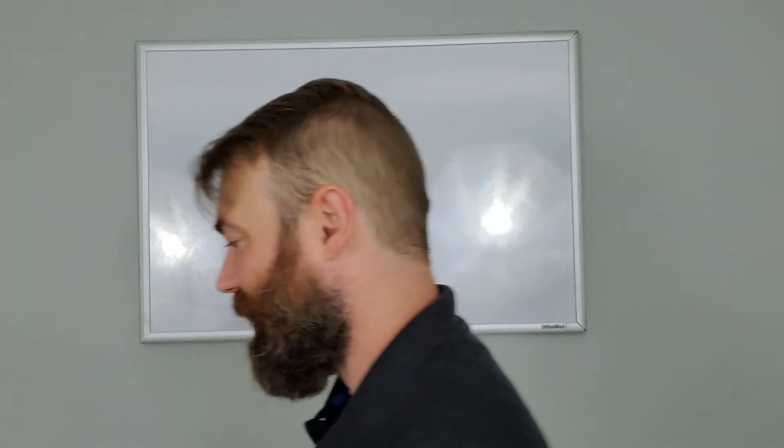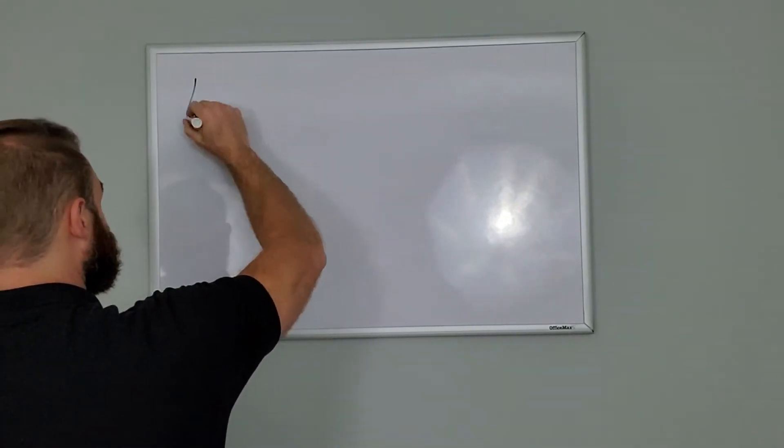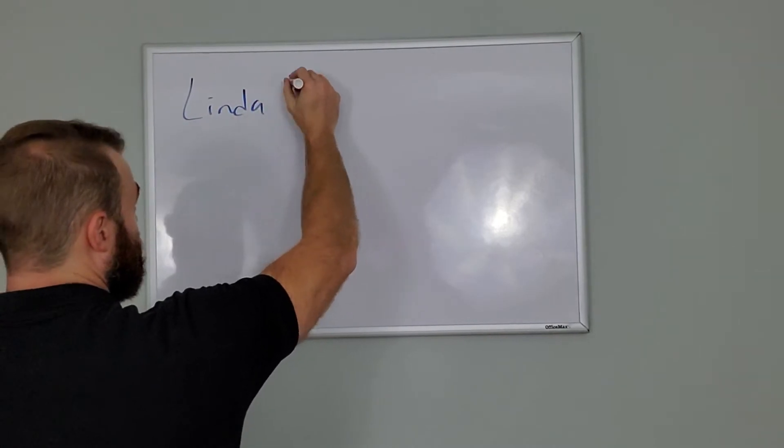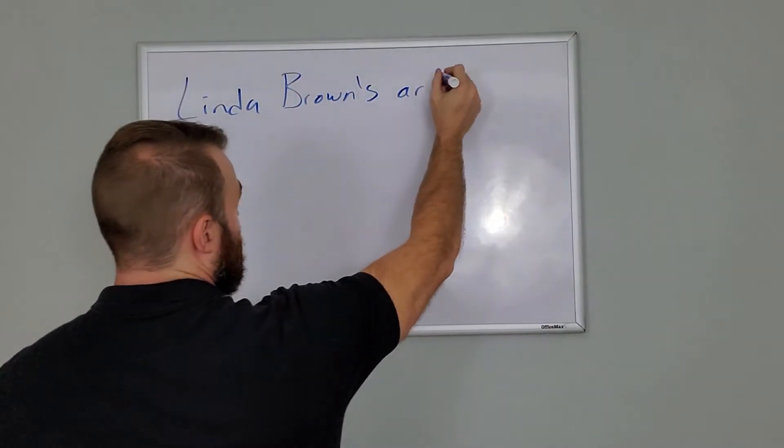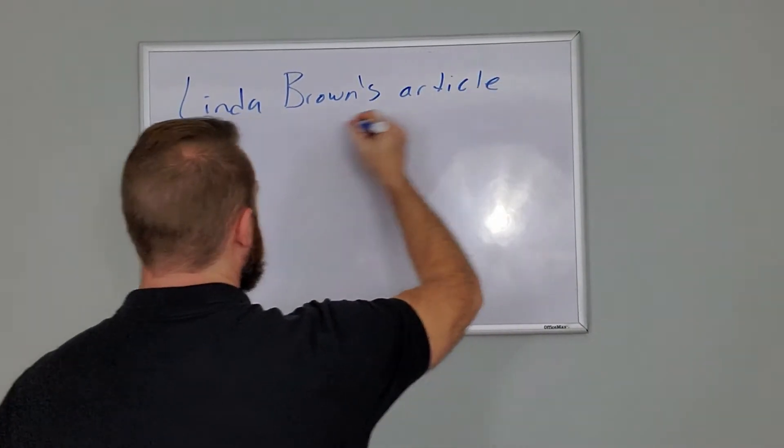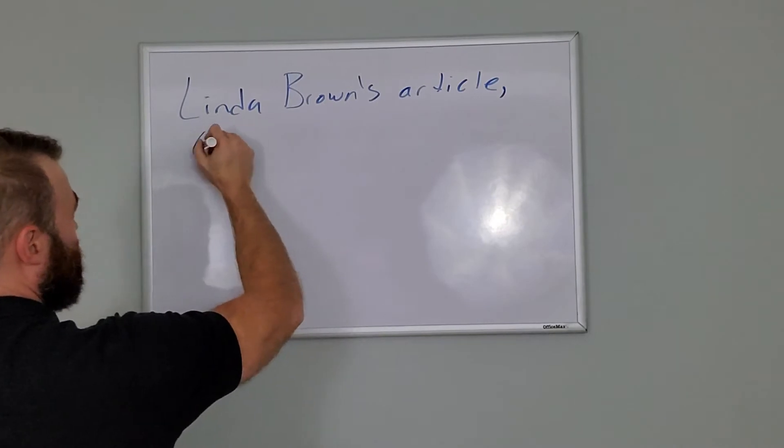So in this case, what are you writing about? You're writing about an article, okay? So you have to give the name of the article. And then you'll probably want to give the author's name. So you might say Linda Brown's article, maybe it's called Home Improvement.